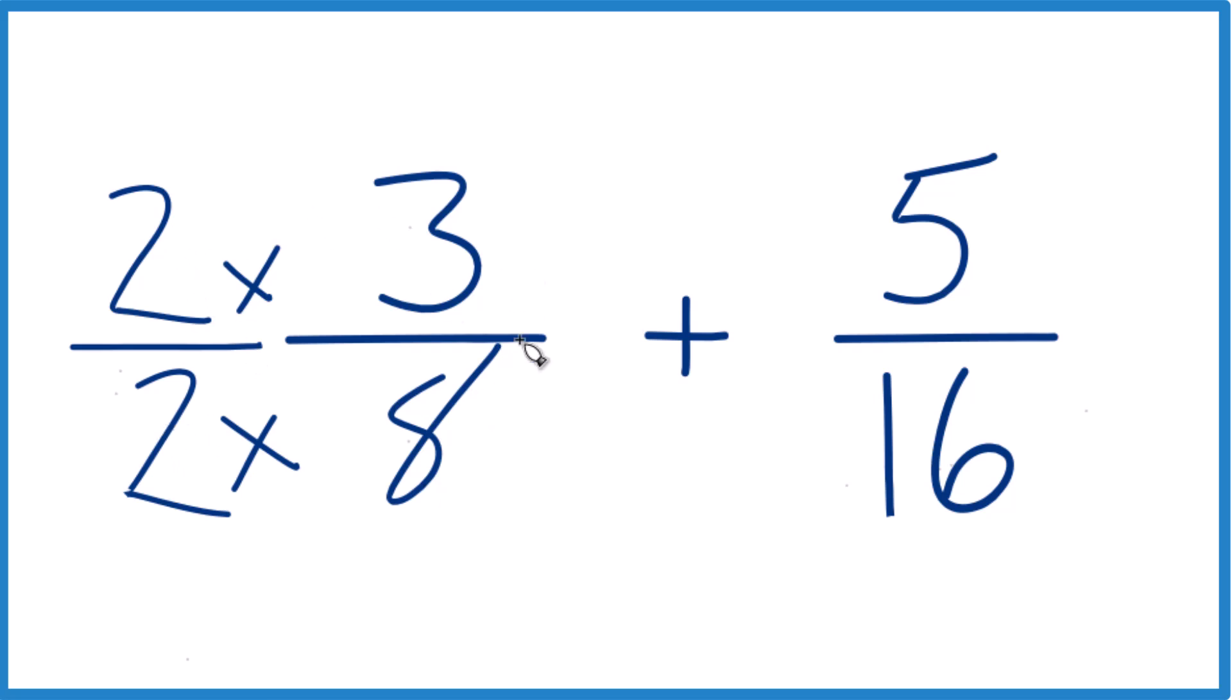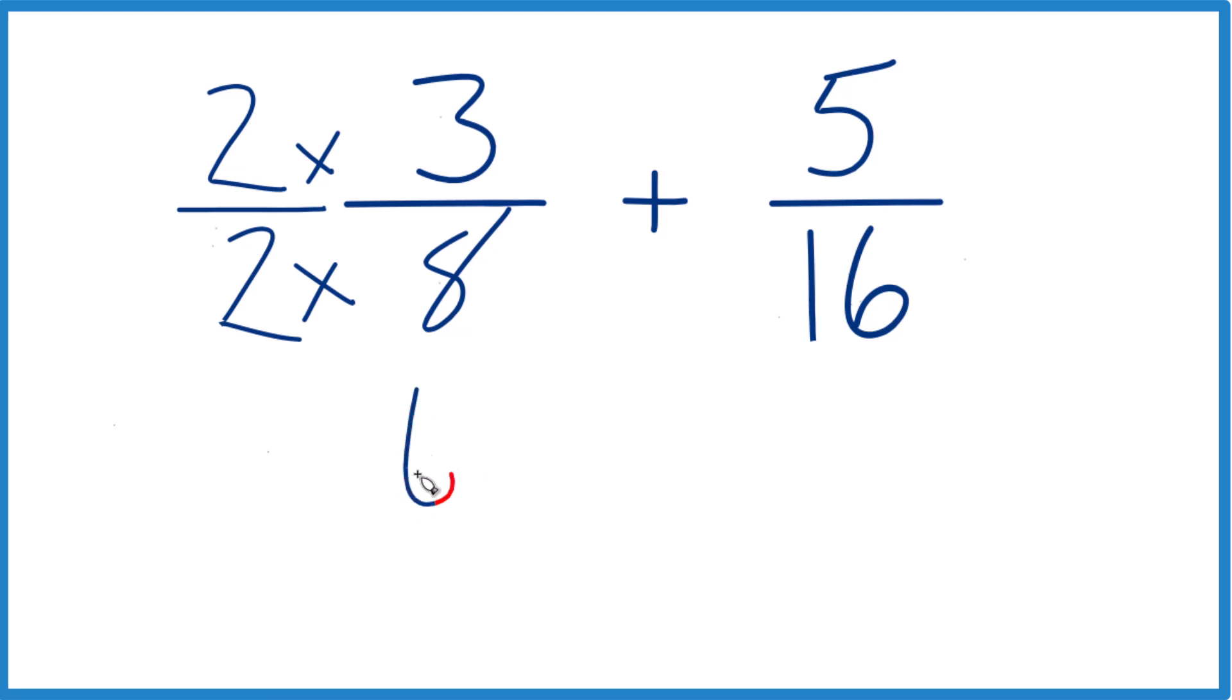2 divided by 2 is 1. So we don't change the value, just the way it's represented. 2 times 3 is 6, and 2 times 8 is 16.